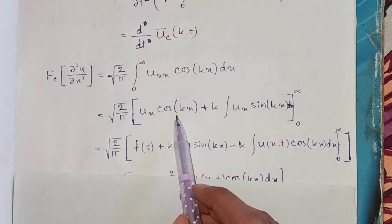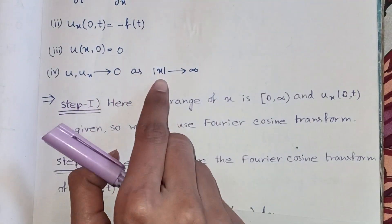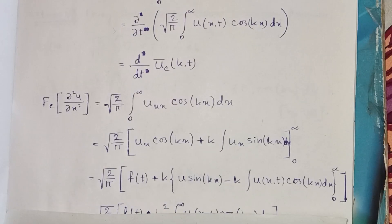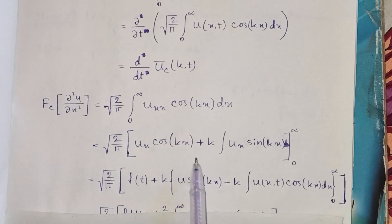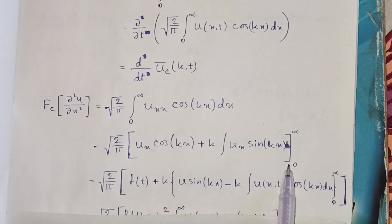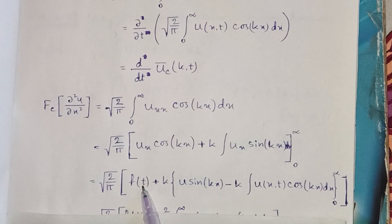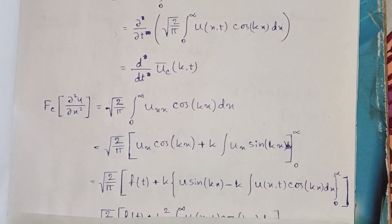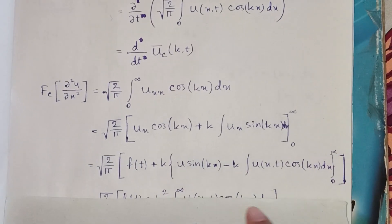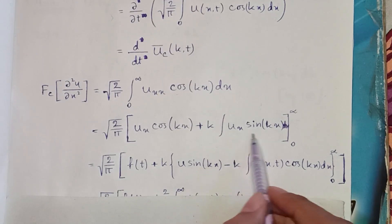When applying the limits, as x → ∞, u_x becomes zero — because from the boundary conditions, as x → ∞, u_x → 0 and u → 0 as well. When the limit is zero it becomes u_x(0, t) = f(t), and with the minus sign it becomes +f(t). Now we apply the same integration by parts procedure to the remaining term.